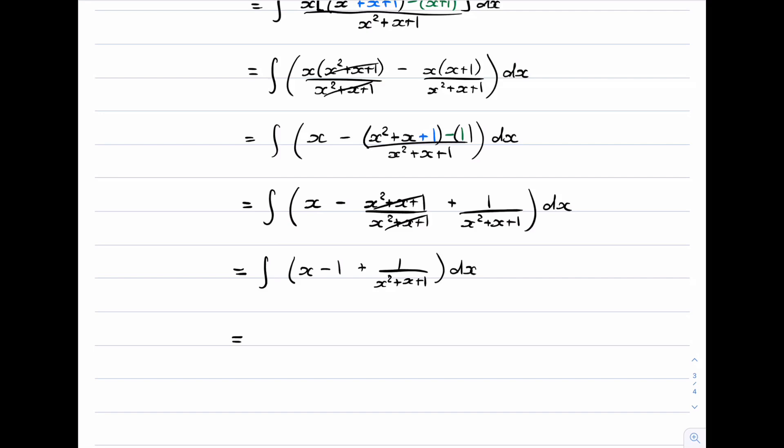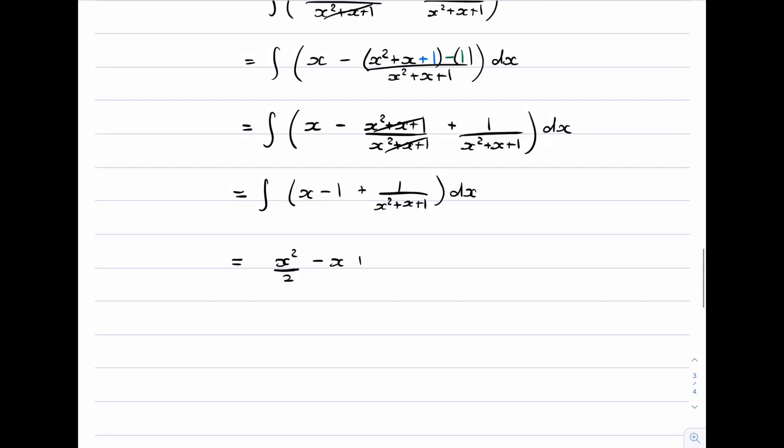The first two are very simple, very standard. It's x squared on 2 minus x. The second one needs a little bit of work. But what we have is we have a fraction with a constant in the numerator and an irreducible quadratic in the denominator. And when we have that we need to complete the square.